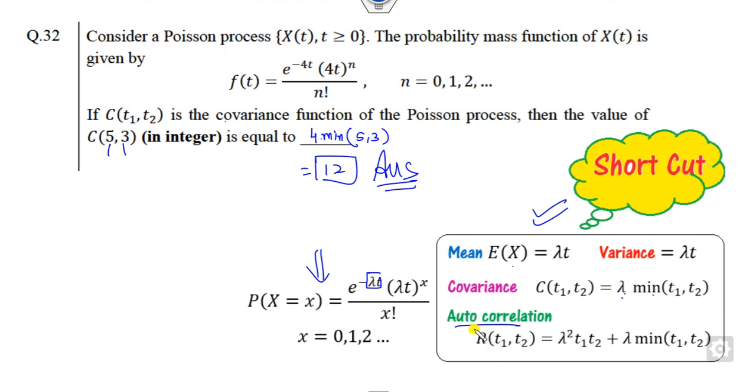If in a future examination somebody asks you to find the autocorrelation, then it will be λ² times t₁t₂ plus λ min(t₁, t₂). That is 16 times 5 times 3 plus 4 times 3, which equals 240 plus 12. So 252 is the autocorrelation.